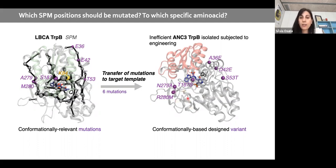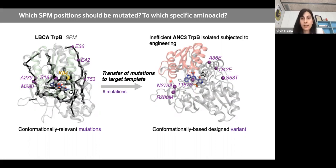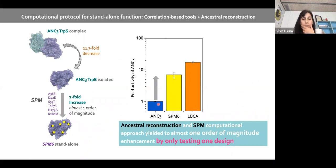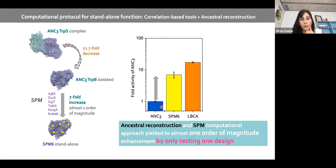SPM6 has mutations mostly far away from the active site — except one — and none are in the COMM domain. We asked the external lab to test this variant, and SPM6 showed a sevenfold increase in standalone kcat. Although we did not reach LBCA activity levels, we successfully improved standalone activity of ANC3 by testing just one design.